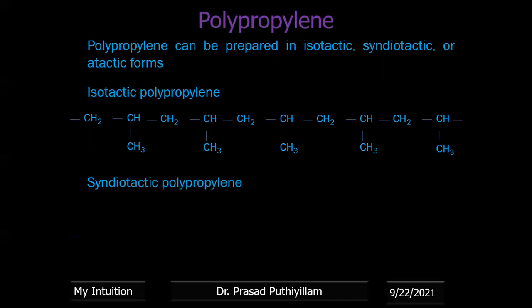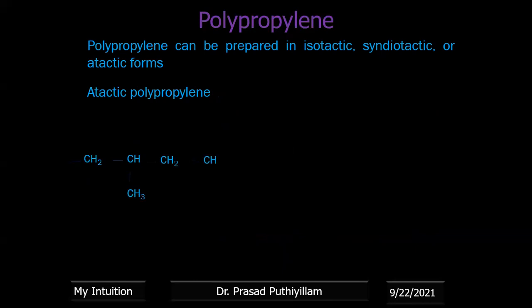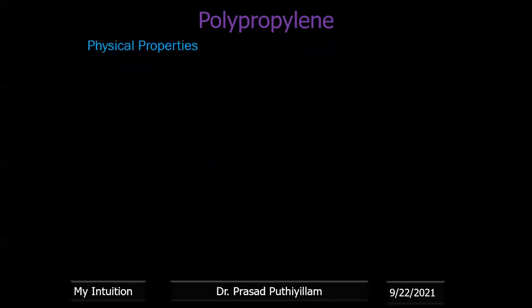In syndiotactic polypropylene, the CH3 groups are also arranged with stereo-regularity, but on opposite sides of the polymer chain in a regular alternating fashion. In atactic polypropylene, the CH3 groups are arranged on either side of the polymer chain in an irregular fashion — there is no particular order. The Ziegler-Natta catalyst controls which tacticity form is obtained.